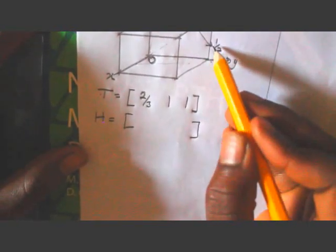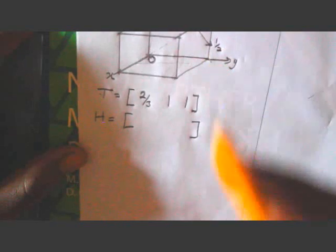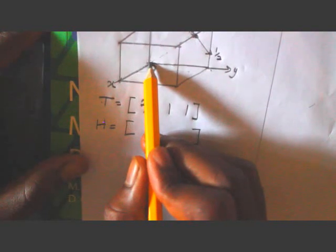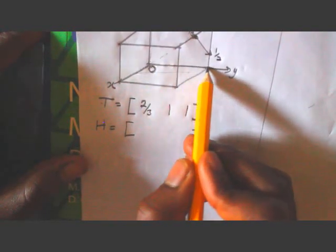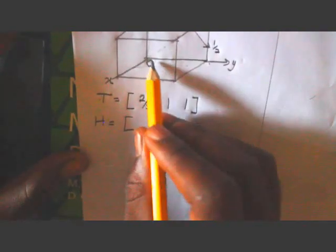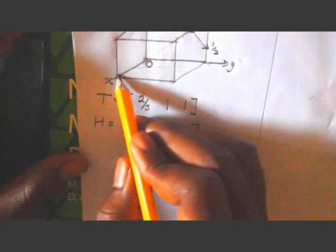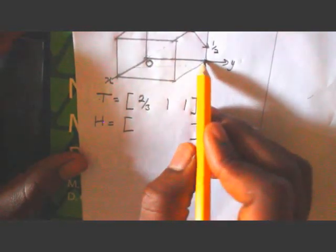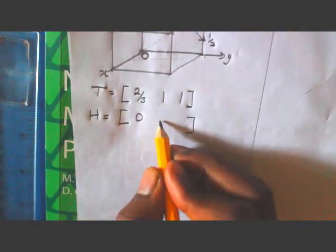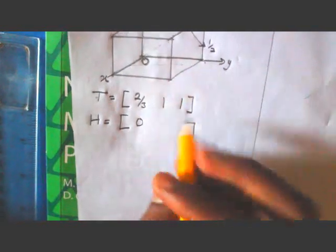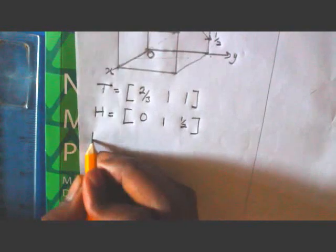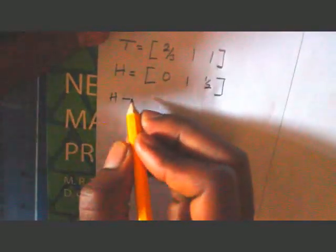Here is our head. For Y is 1 and for Z is one over two. So for the head: X is 0, Y is 1, Z is one over two — giving us (0, 1, 1/2). Just subtract head minus tail.